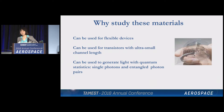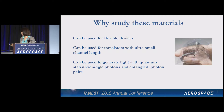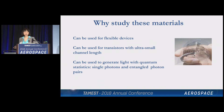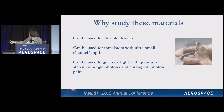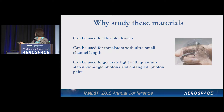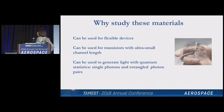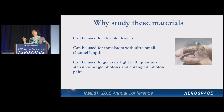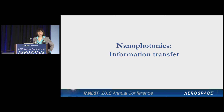Why do we study these materials? They can be used for flexible devices — the electronics of the future won't be confined to your laptop or cell phone. They can be worn on the skin, painted on a wall, or put in little fabrics that you wear on your clothes. These materials have already been shown to build very small channel transistors — that on-and-off switch that is the basic unit for any information processing device. And my passion is studying how they generate light — they can be used to generate individual photons one at a time, or pairs of photons with mysterious connections between them.